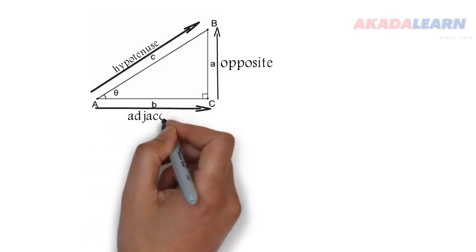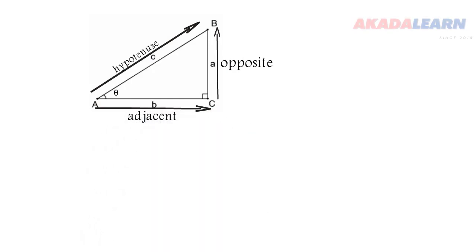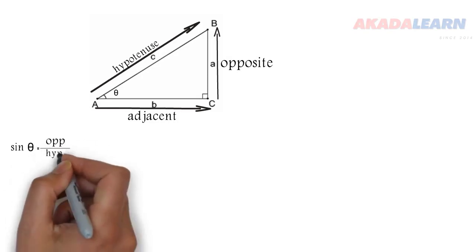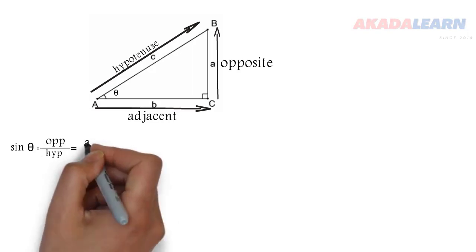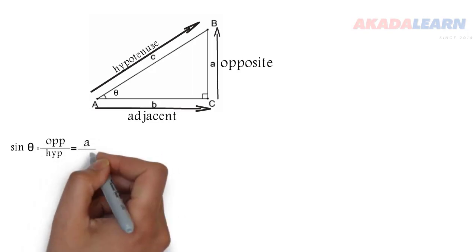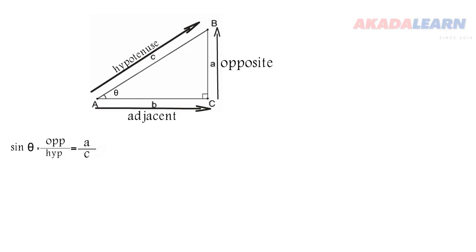So let's see the ratios now. Sine theta is opposite over hypotenuse. Our opposite is A and our hypotenuse is C, so it's A over C. So they are called ratios.